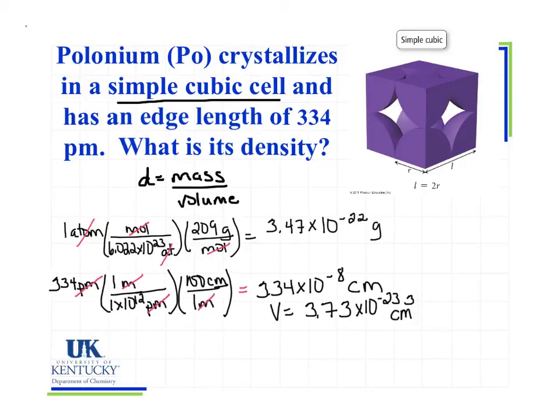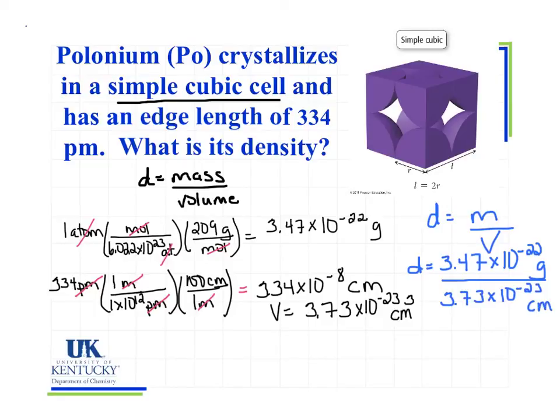Now we can use the grams and the volume to find the density. So now I have my density equals mass over volume. Density equals 3.47 times 10 to the minus 22nd grams over 3.73 times 10 to the minus 23rd centimeters cubed. And I can do my calculation to find the actual density.